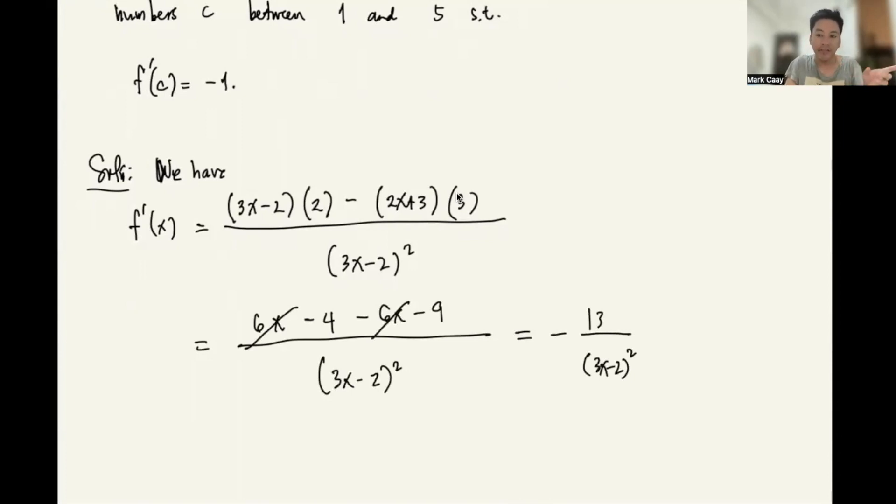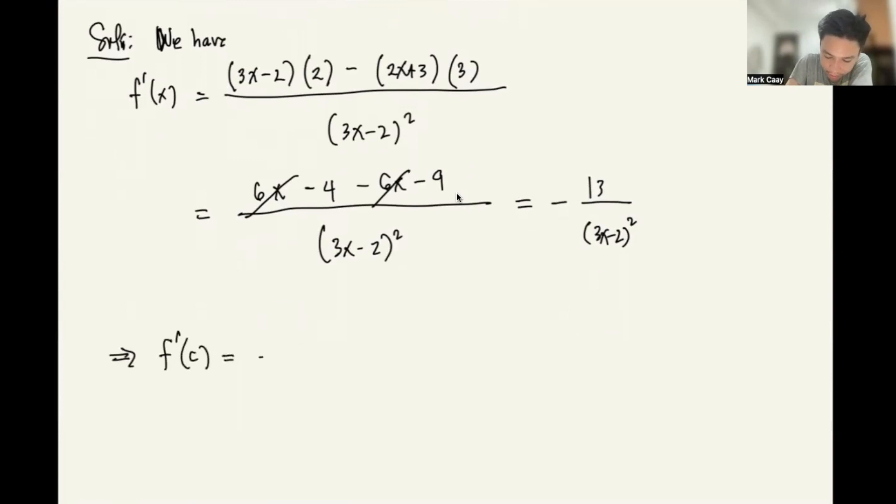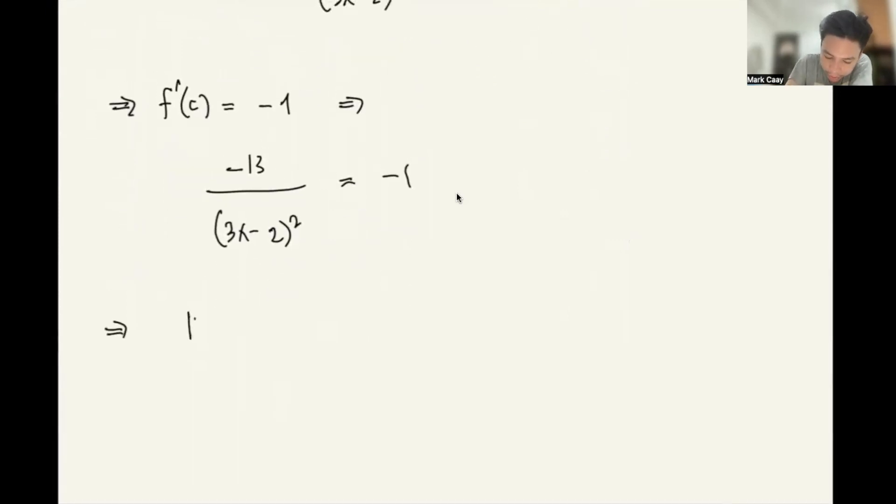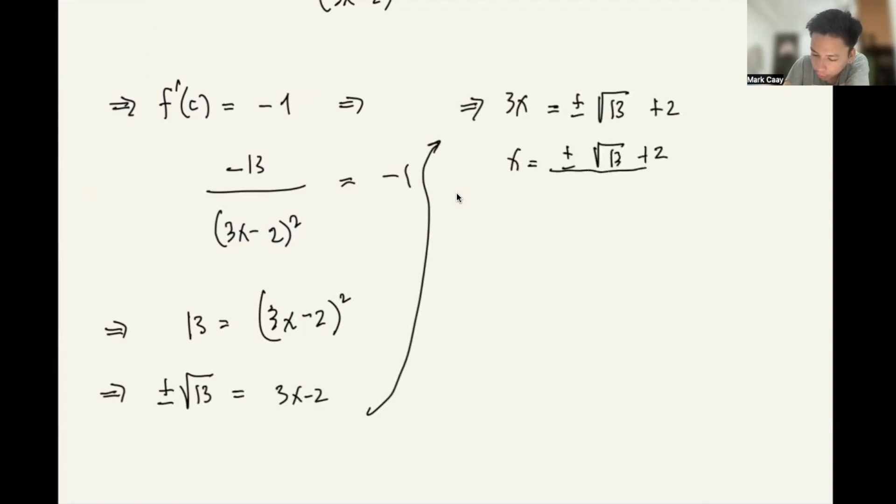According to the mean value theorem, you would always find c. So you're looking for c. So that means f'(c) equals negative 1 implies your negative 13 all over (3c-2) squared equals negative 1. So this means 13 equals (3x-2) squared, because they're just crossing and they're both negative on both sides. Multiplying both sides by negative 1 makes them all positive. So taking the square root of both sides, we have plus or minus square root of 13 equals 3x minus 2. Solving for x, 3x equals plus or minus square root of 13 plus 2. And then x equals (plus or minus square root of 13 plus 2) all over 3.